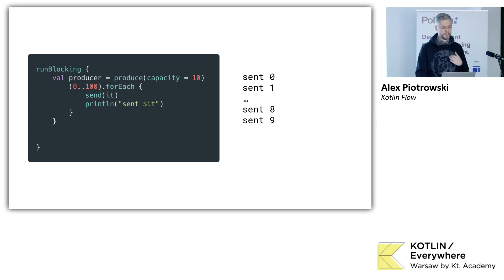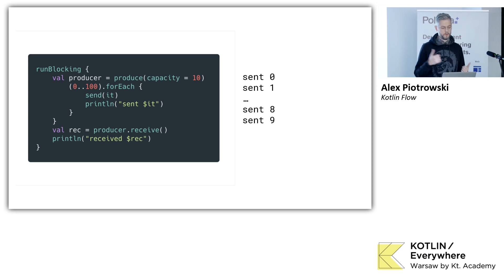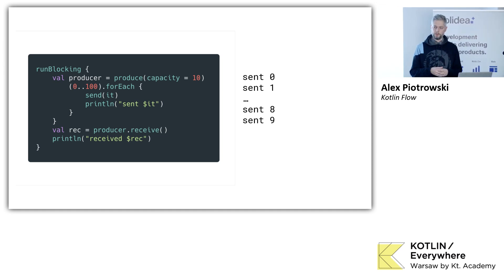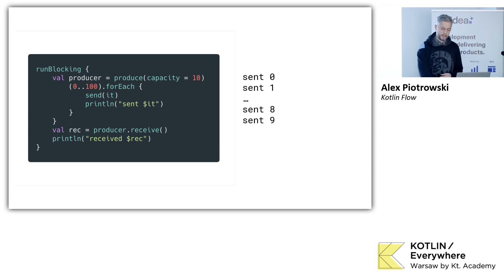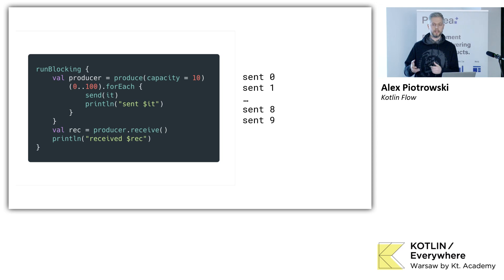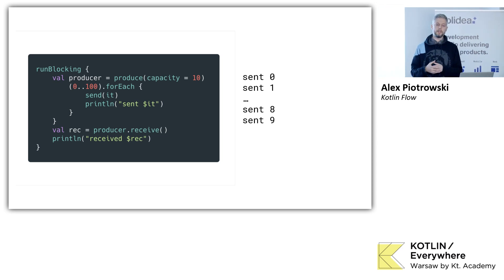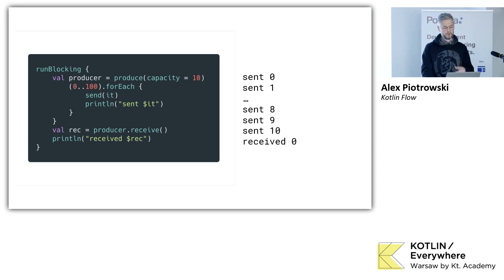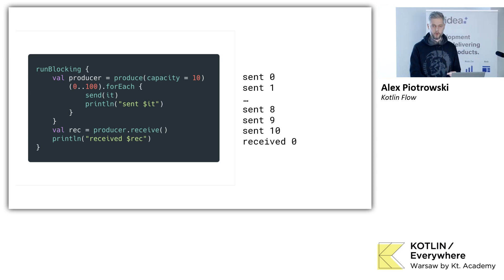We can imagine that we're going to receive data from that producer. If we run code like this, 'sent 10' will be printed out because now, after receiving data, there's capacity for one more value to be produced. Then we can print out 'receive zero.' This is hot because at this point it emitted some data and did some work even though there was no one to observe it — no one to receive this data. Then of course we can receive data and some more work will be done. So this is hot, and again, flow is cold.